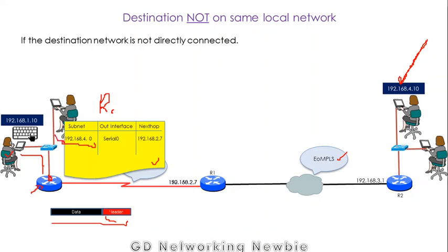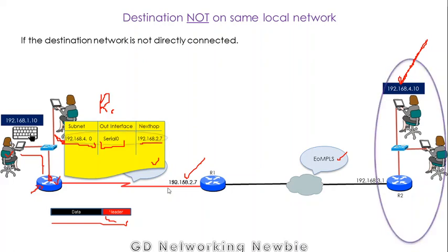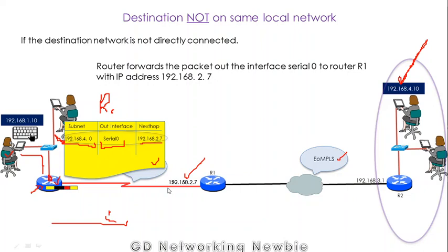In the routing table it will find the destination subnet, and to send the packet to that subnet the router has to use its serial interface to forward the packet to the next hop IP address — which is router R1. For that, the router looks at the medium connecting it to R1, which is a serial connection. For serial connections we use HDLC data link protocol, so HDLC header and trailer will be used as the encapsulation. After this encapsulation, the router sends the frame to the next router.